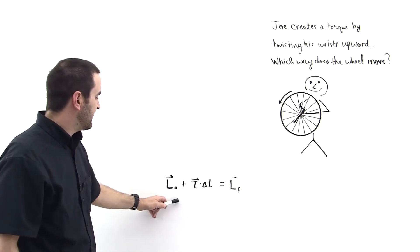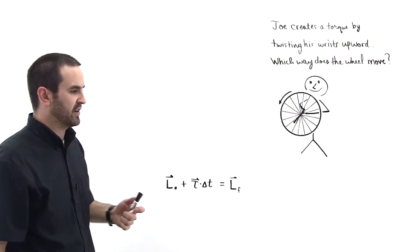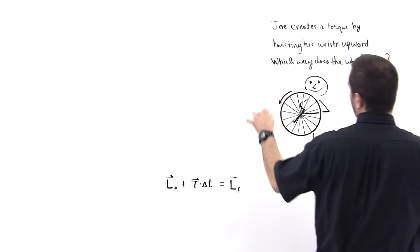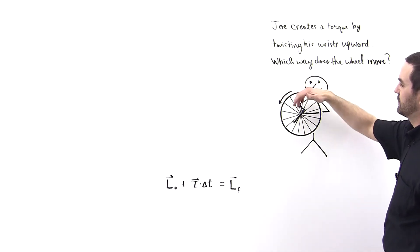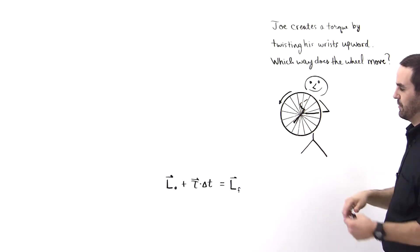So let's first define the initial angular momentum direction. Well, this thing is spinning like this, so we take our right hand and curl our fingers in the direction of rotation, and our thumb points in the direction of the initial angular momentum, which is out of the board.